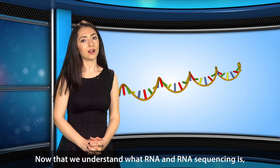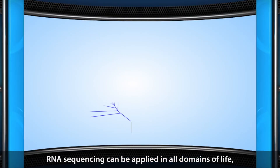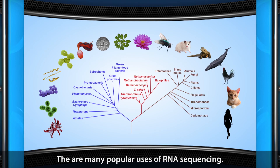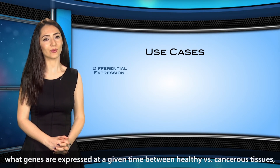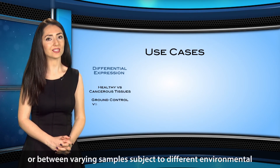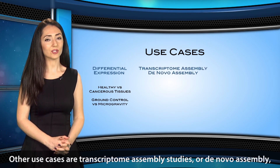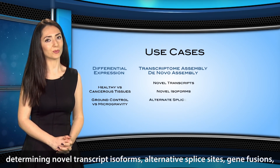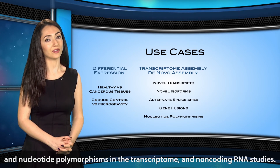Now that we understand what RNA and RNA sequencing is, what is RNA sequencing used for? RNA sequencing can be applied in all domains of life, from bacteria to the great blue whale. There are many popular uses of RNA sequencing. For example, differential expression analysis identifies what genes are expressed at a given time between healthy versus cancerous tissues, or between samples subject to different environmental or drug conditions. Other use cases are transcriptome assembly studies or de novo assembly, determining novel transcript isoforms, alternative splice sites, gene fusions, and nucleotide polymorphisms in the transcriptome, and non-coding RNA studies.